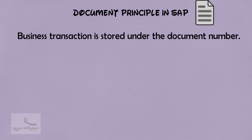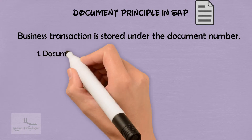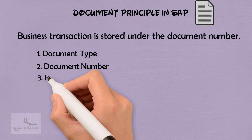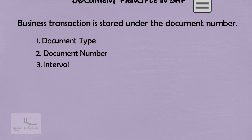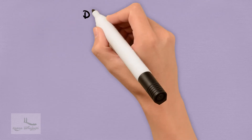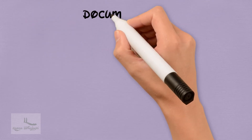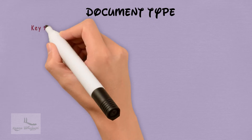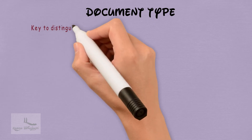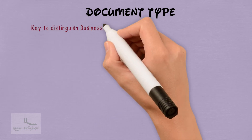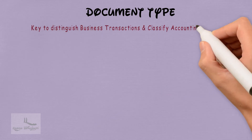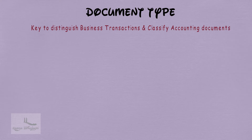The three concepts are: document type, document number, and interval. Document type is a key which is used to distinguish between the different business transactions and to classify the accounting documents.